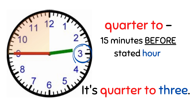Next, 'quarter to' means 15 minutes before the stated hour — 15 minit sebelum jam yang hendak ditunjukkan. Like this picture: 15 minutes approaching three o'clock. So when someone asks 'what's the time?' you answer: it's quarter to three.